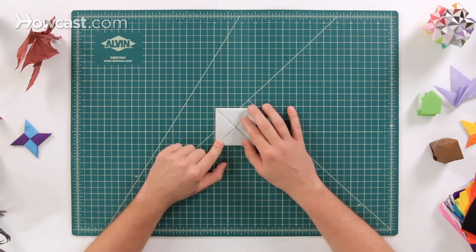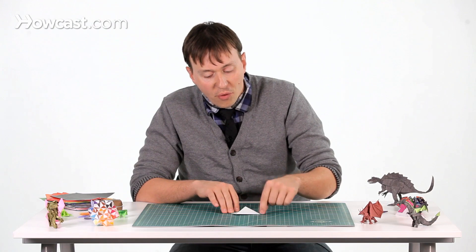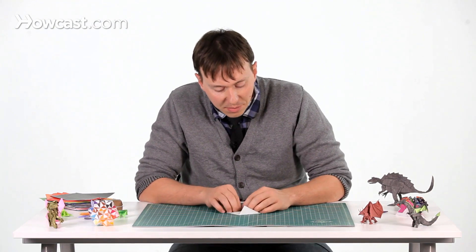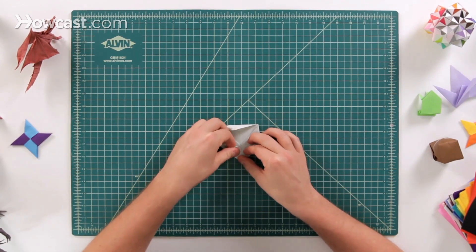Now after you've done that, the next step is a triple blintz base. So we're going to do it one more time. Go for all four corners. Fold those into the middle. Again, the paper is going to start getting a little thick here, but that's okay.